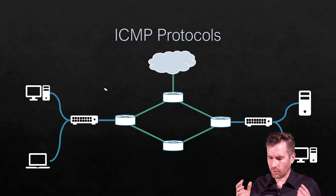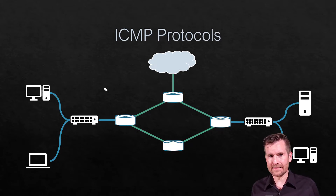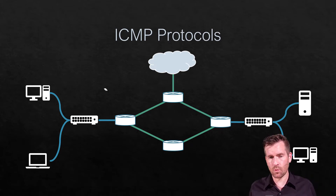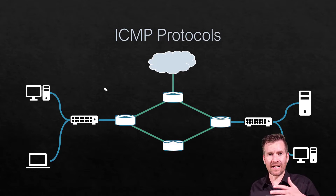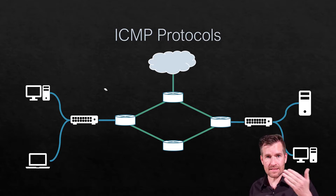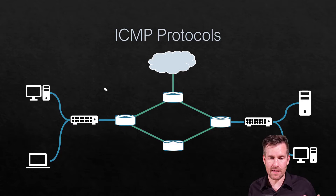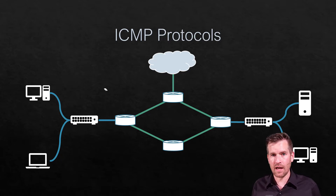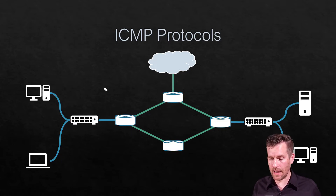ICMP stands for Internet Control Message Protocol. ICMP operates at layer 3 and it's a way for devices to communicate back and forth to message about what's happening with IP packets. Ping is a well-known example of how ICMP packets can communicate.